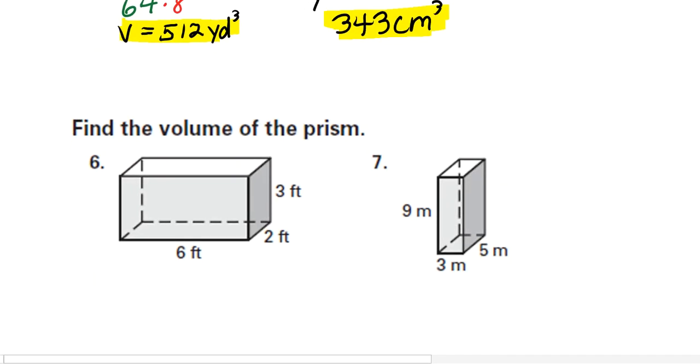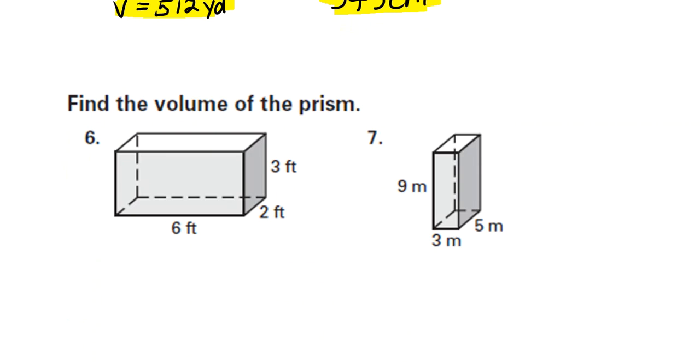Let's take a look at one of the rectangular prisms. So again, we have to find the area of the base, and this base is shaped like a rectangle. So that's 6 times 2. And then multiply that by the height of the prism, which is the distance between the bases, times 3. So 6 times 2 is 12, and 12 times 3 is 36. So our volume is 36 cubic feet or feet cubed.